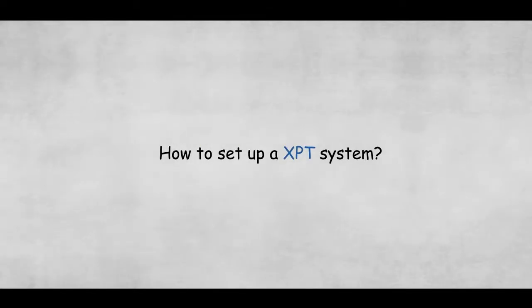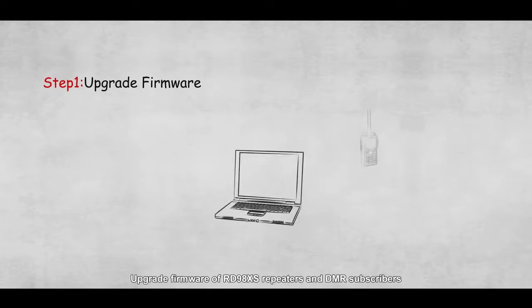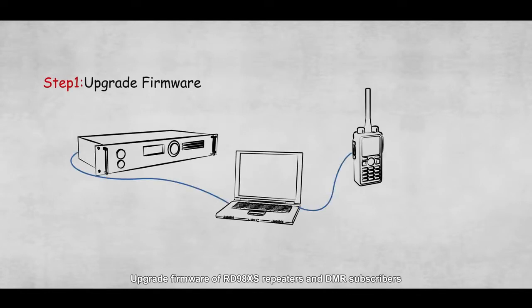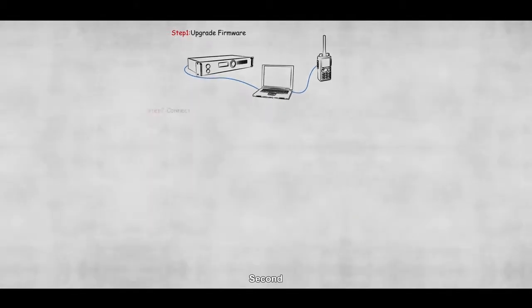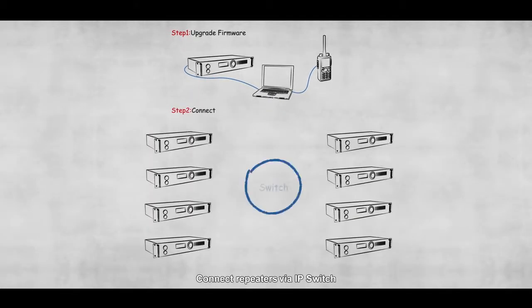How to set up a XPT system? First, upgrade firmware of RD98XS repeaters and DMR subscribers. Second, connect repeaters via IP switch.